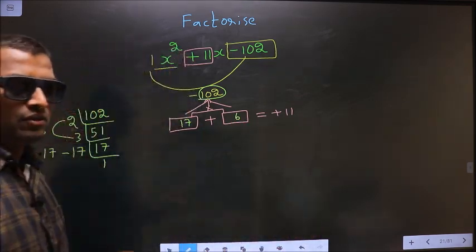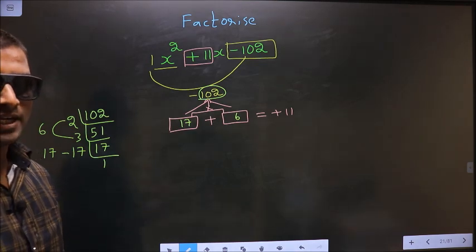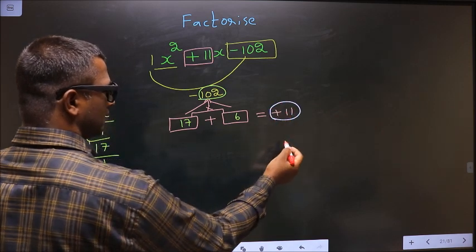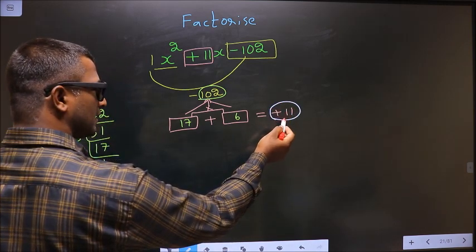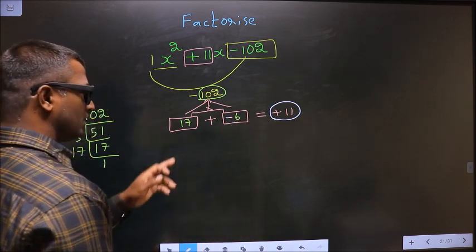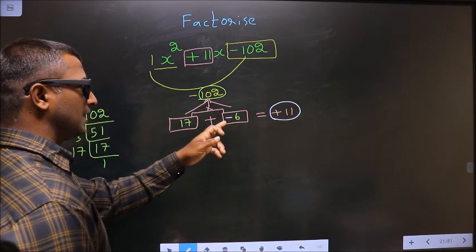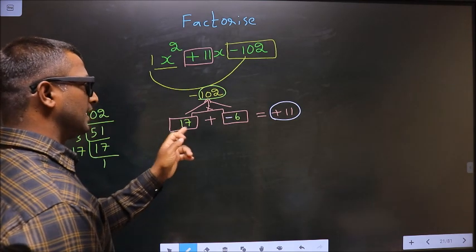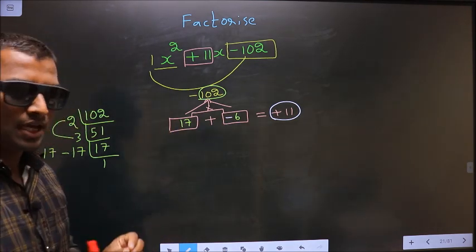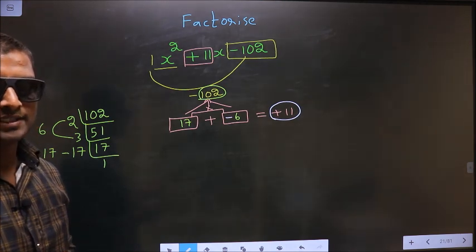Now we should adjust the signs. What I mean is, here we should get plus 11. To get plus 11, we should put negative before 6. Now 17 minus 6 is plus 11. 17 into minus 6 is minus 102. So now the signs are also adjusted.